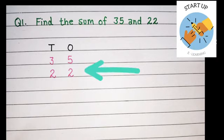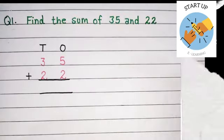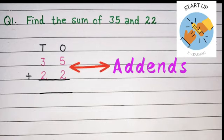Now let's take number 22. Here again, 2 will be written under the ones column under 5, and another 2 will be written under 3 under the tens place. Here 35 and 22 are the addends. Now we will add them.